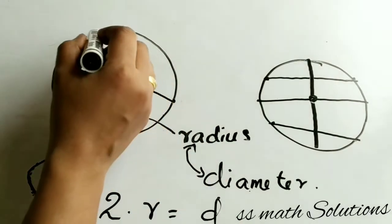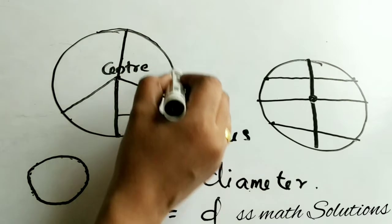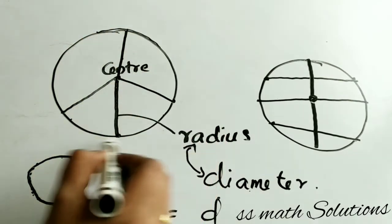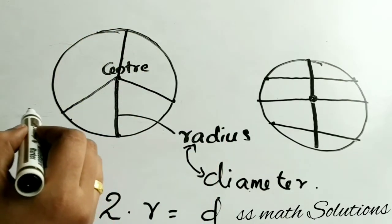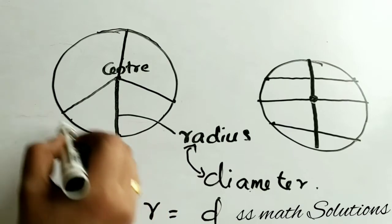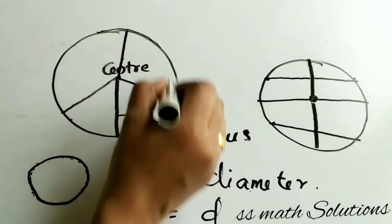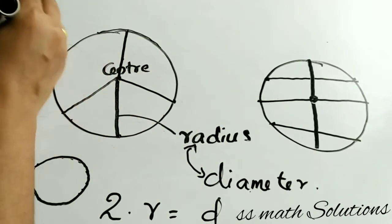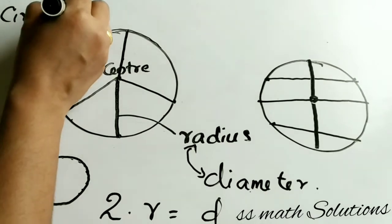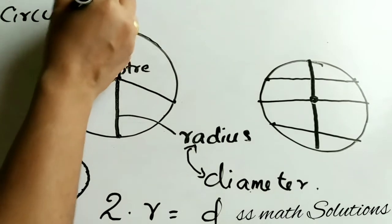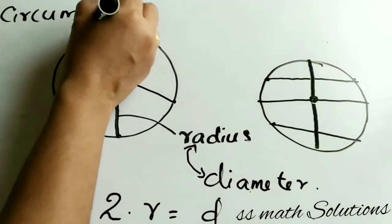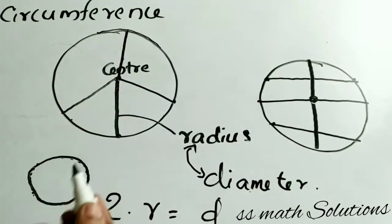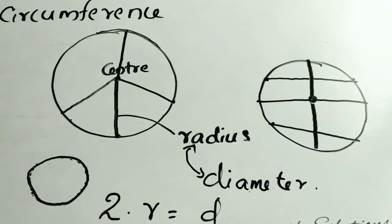So this all the collection — we can call it as the length of the circle. The length of the complete circle is called the circumference. Circumference or perimeter — the circumference of the circle or perimeter of the circle.